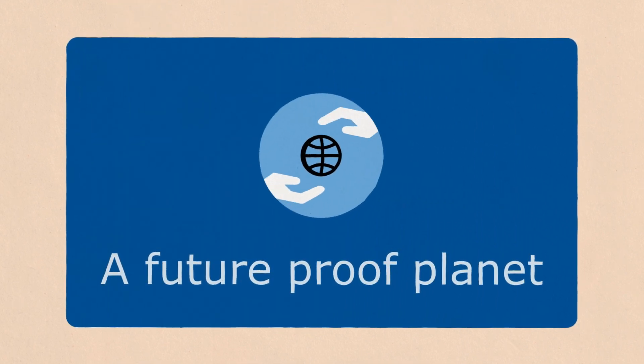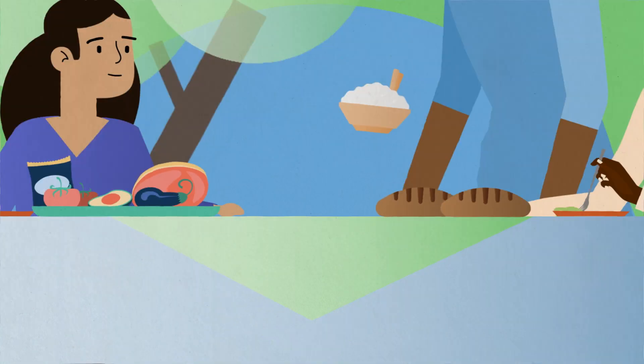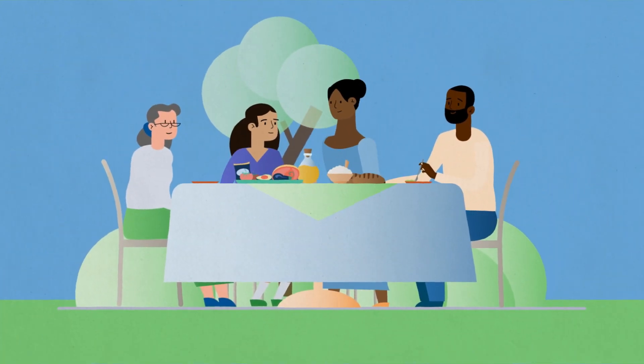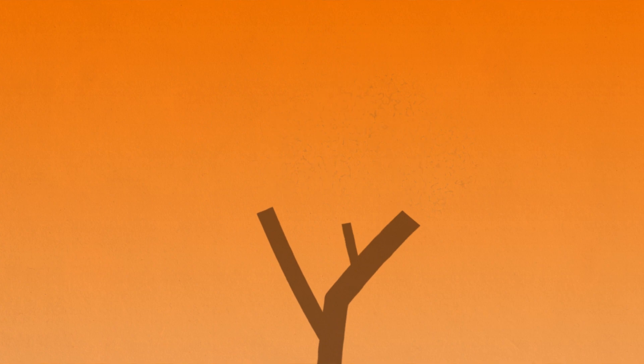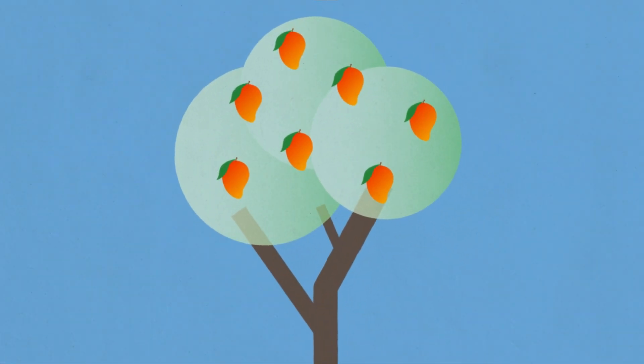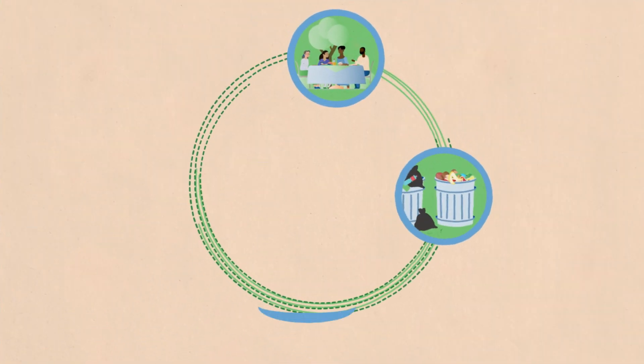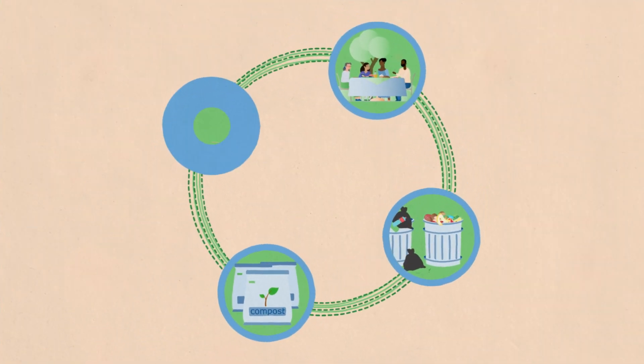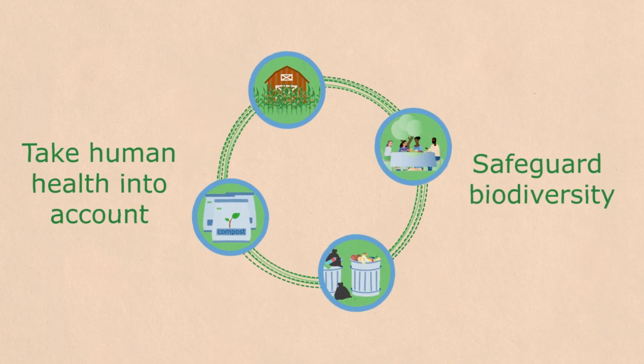A future-proof planet. Crucial to today's food security is our adaptability in the face of climate change. We need to future-proof our food production. How? By creating food systems which use resources in a sustainable, circular way, take human health into account, and safeguard biodiversity.